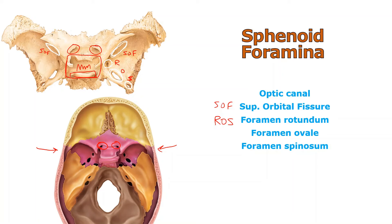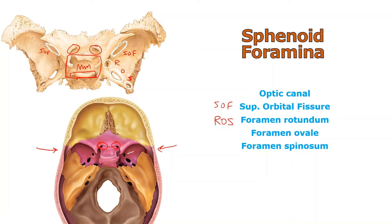Notice here on the picture below, the pink bone is the sphenoid. You can see: foramen rotundum here, foramen ovale here, and foramen spinosum here. And this one here is our old friend foramen lacerum — it's at the boundary between the sphenoid and temporal. SOF-ROS will help you remember all of those when you're troubled by it.